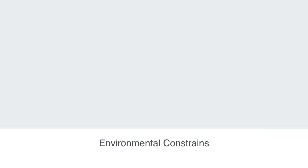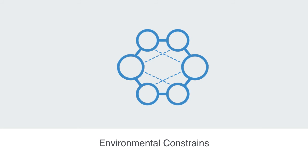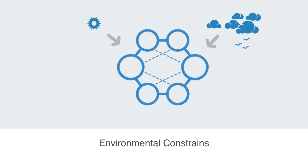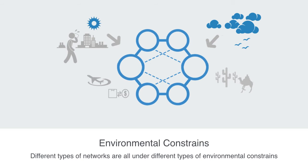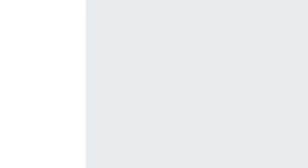This helps to illustrate the two key factors to generating any given structure to a network. Firstly, we have the context or environmental constraints that the network is under. Different types of networks are under different types of environmental constraints — for example, the geological constraints placed upon travelers, the physiological constraints placed upon metabolic networks within our body, or the financial constraints placed upon a logistics network. All of these represent resistance to network formation that the environment places upon the network.